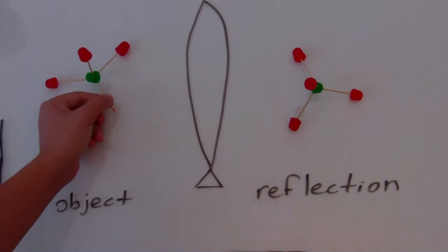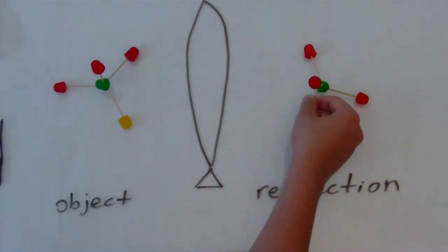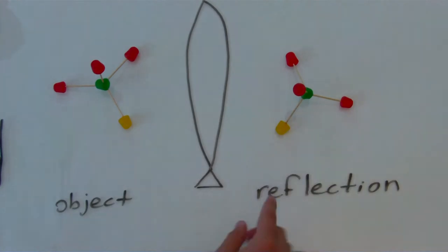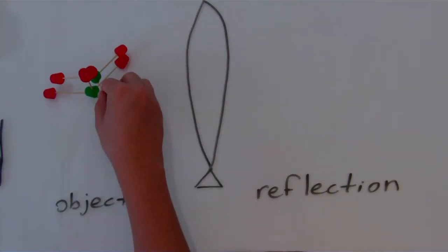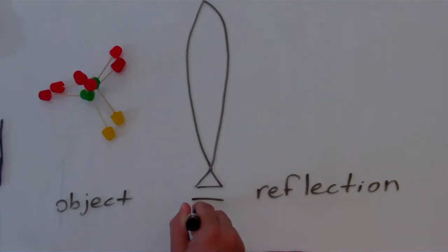Let's replace one of the atoms on our molecule object and its reflection. The reflection matches the object, but are they superimposable? Yes, therefore, the molecule is not chiral.